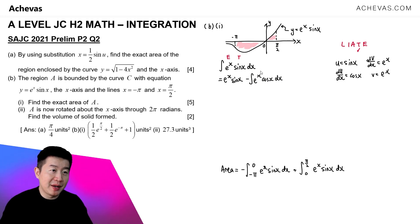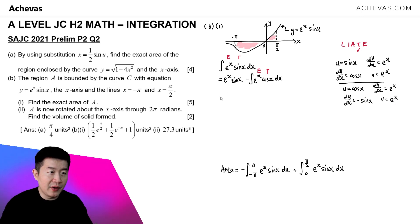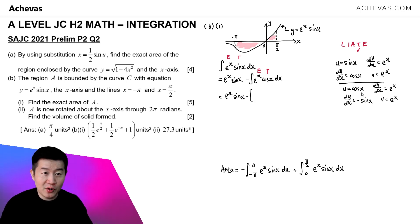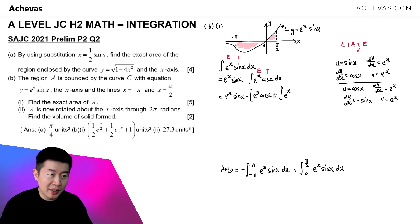We apply integration by parts a second time to ∫eˣcos(x) dx. This time we let u = cos(x) and dv/dx = eˣ, so du/dx = -sin(x) and v = eˣ. Re-expressing the integral: eˣcos(x) - ∫eˣ(-sin(x)) dx. Taking out the negative, the integration of -sin(x) combined with the existing negative becomes positive, giving us + ∫eˣsin(x) dx.